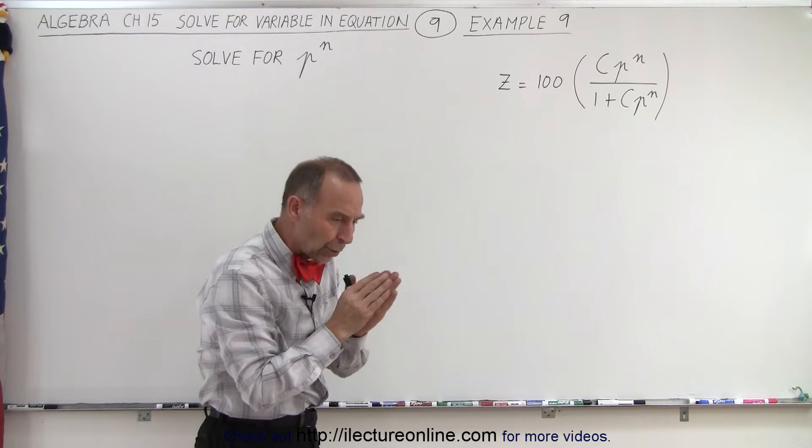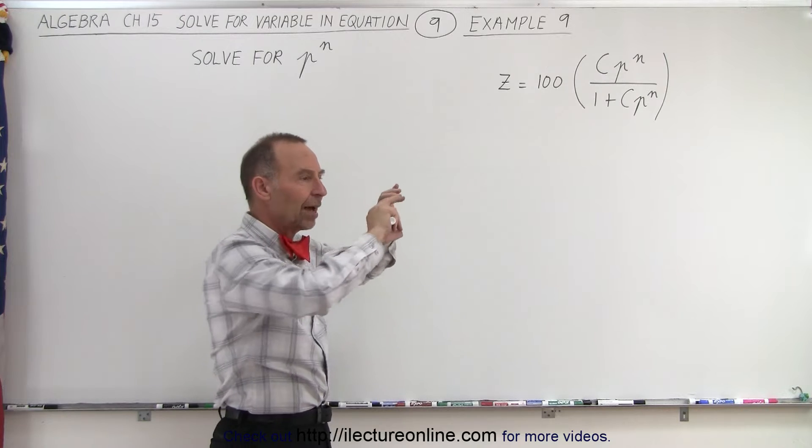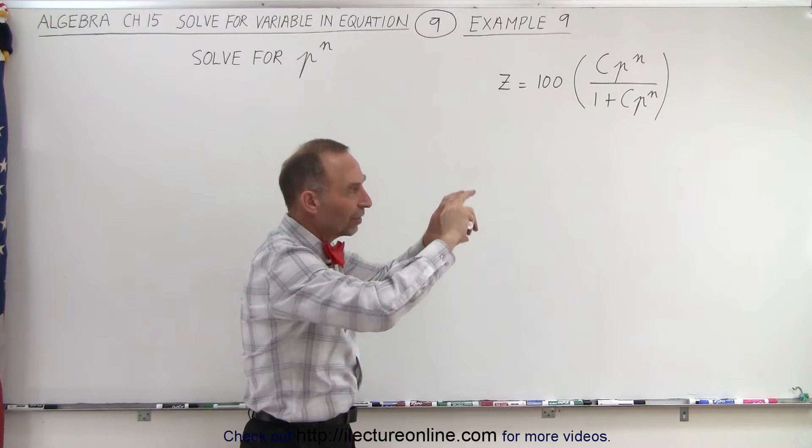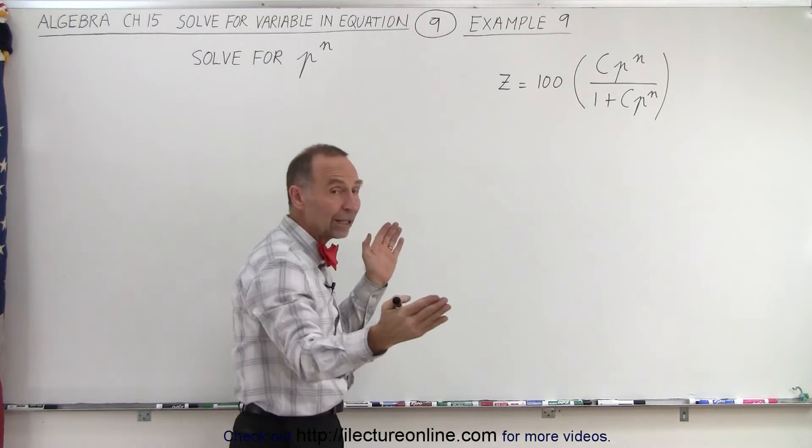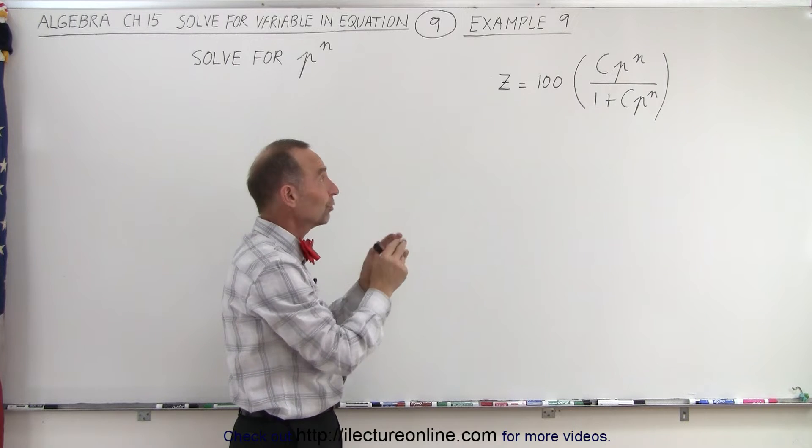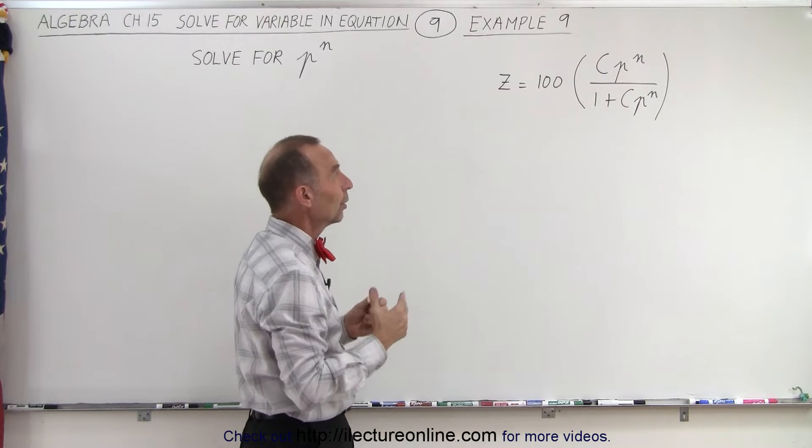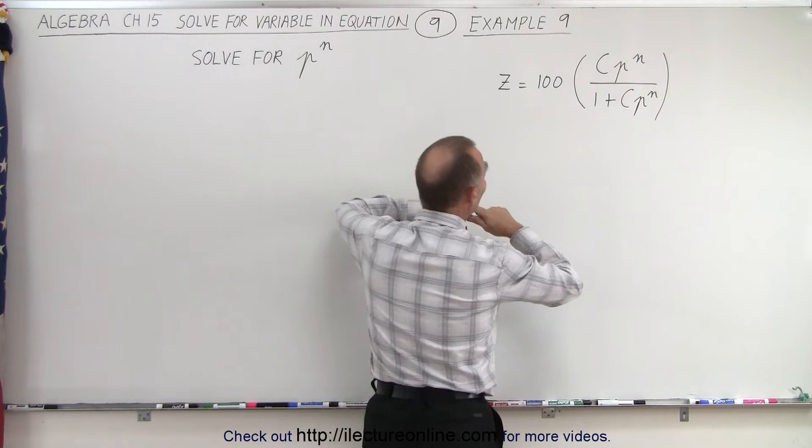...where you multiply everything out so that you have a series of terms on the left side and a series of terms on the right side, and then you collect all the terms that contain p to the n. In other words, let's rewrite this as follows.